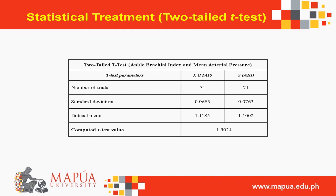This slide shows another two-tailed T-test, but this time for MAP and ABI, since these two are the main values used to determine if a patient has PVD or not. For this T-test, we used 71 trials and the computed T-test value is 1.5024. Again, the computed T-test value is less than the critical value, so there is no significant difference and the two values are comparable to each other. Overall, this basically means that the prototype is, as expected, accurate.